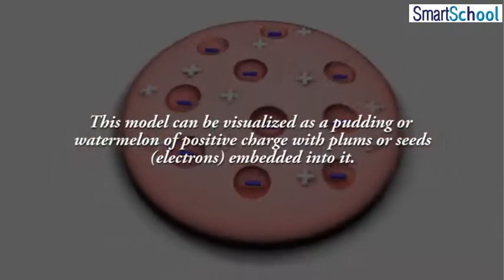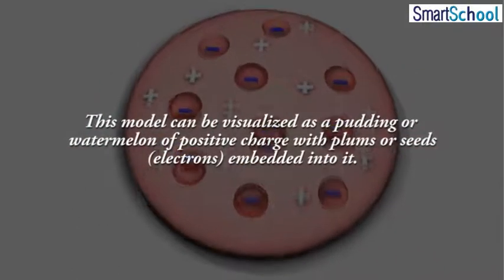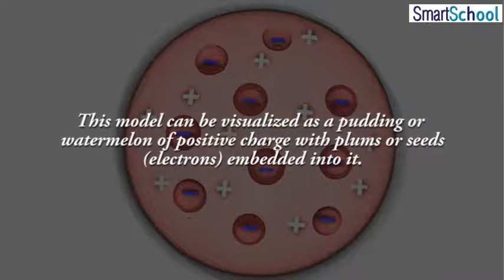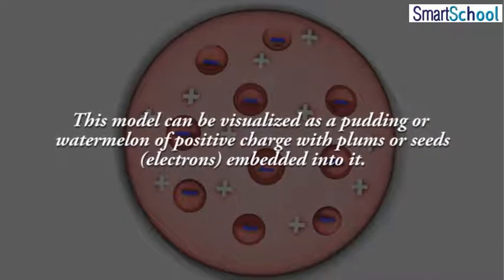This model can be visualized as a pudding or watermelon of positive charge with plums or seeds, representing electrons, embedded into it.